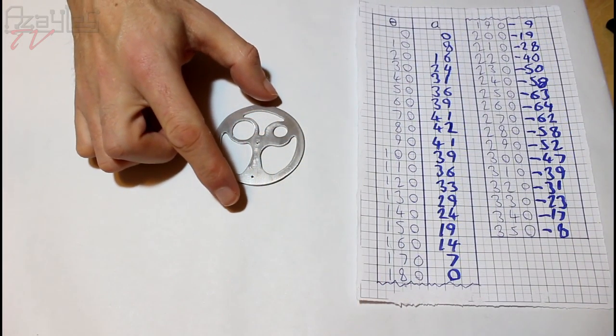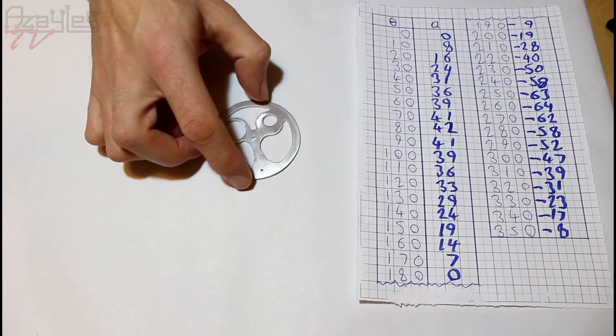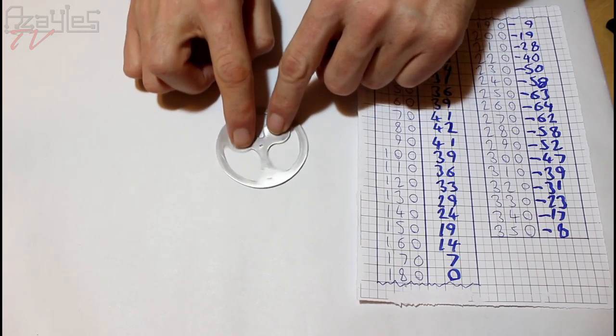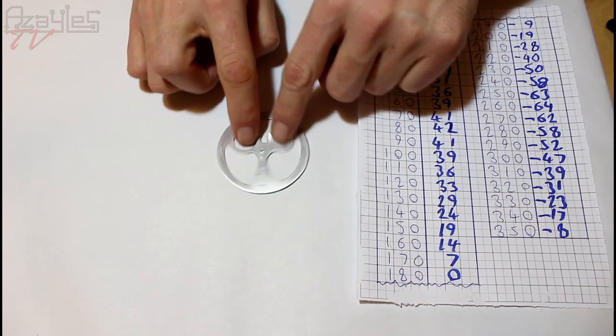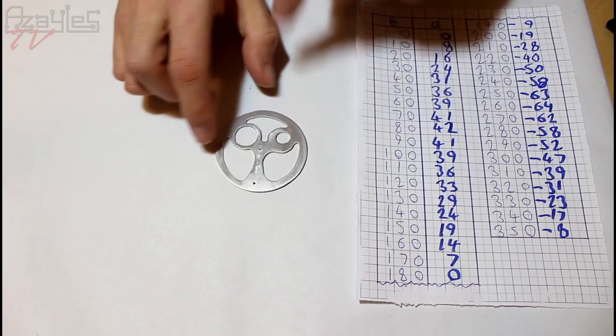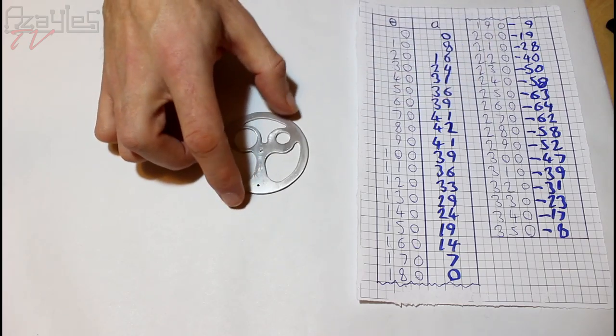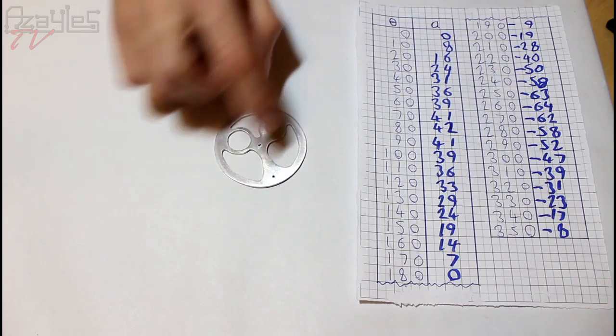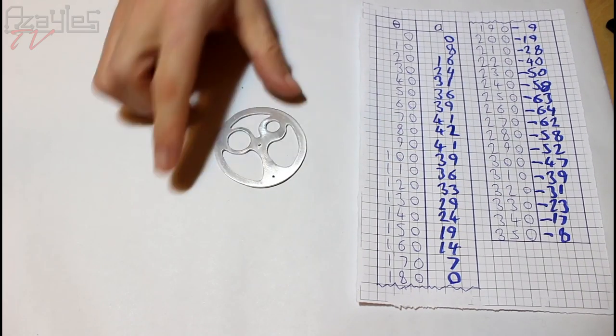Now the more mathematically minded of you still watching this video are probably thinking, hang on, swinging back and forth like this, like a pendulum almost, is very much like a sine function. So why not just plot a sine wave and program that on the fly to run this? That's a lot easier than all these numbers, surely. And I'll show you why.